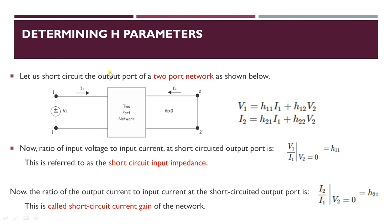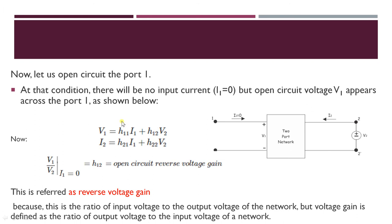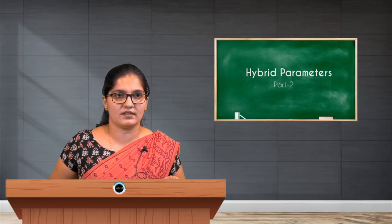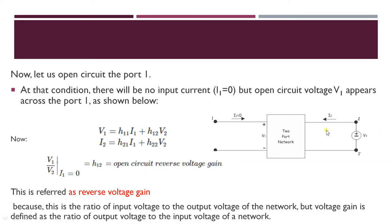The remaining two parameters H12 and H22 will be obtained by open circuiting the input port. When port 1 is open circuited, I1 becomes 0 and open circuit voltage V1 appears across port 1. From the two equations, when I1 is treated as 0, we get H12, which is nothing but V1 divided by V2 when I1 is 0. So the open circuit reverse voltage gain H12 equals V1 by V2.